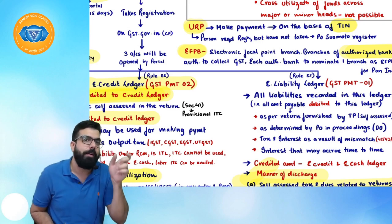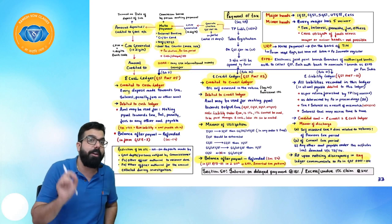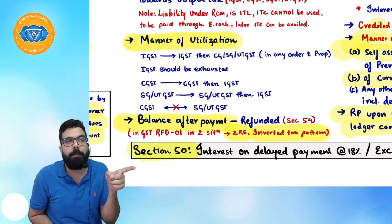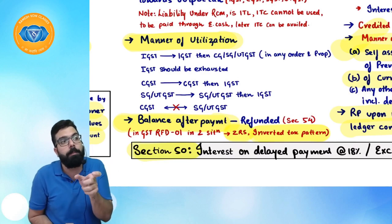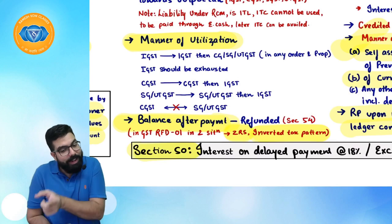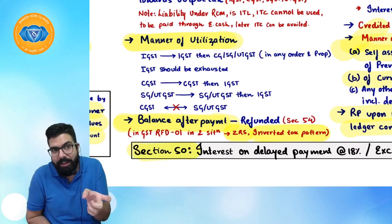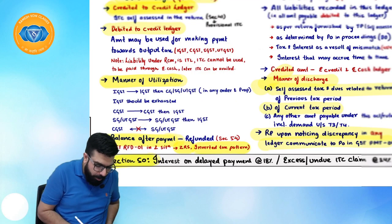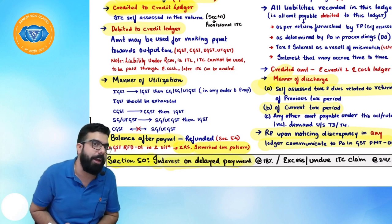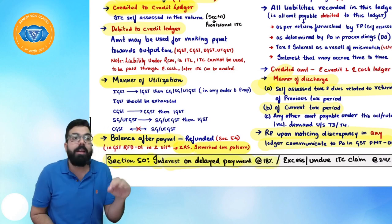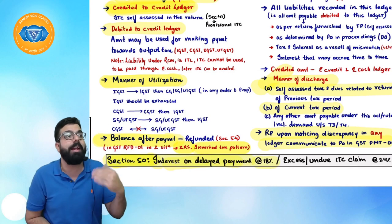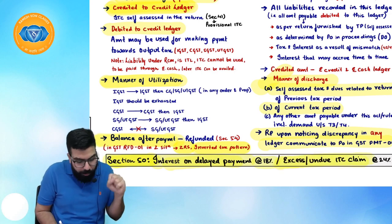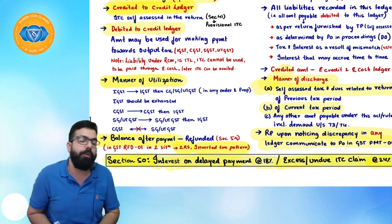Section 49 covers payment of taxes read with Rules 85, 86, and 87 — Rule 85 for e-liability ledger, 86 for e-credit ledger, 87 for e-cash ledger. Section 50 deals with interest on delayed payment: any delayed payment attracts interest at 18% per annum. If you have claimed excess credit or unduly used credit, you must refund it with interest at 24% per annum.